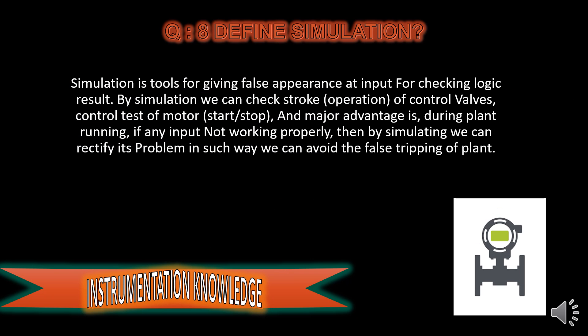Define simulation. Simulation is a tool for giving a false appearance at input for checking logic results. By simulation, we can check the operation of control valves, control test of motors — meaning starts and stops. A major advantage is that during plant running, if any input is not working properly, by simulating we can rectify its problem, and in this way we can avoid false tripping of the plant.